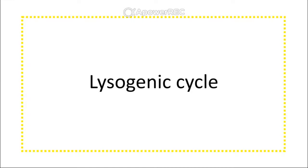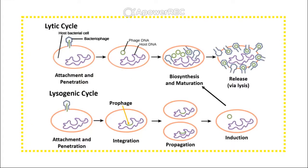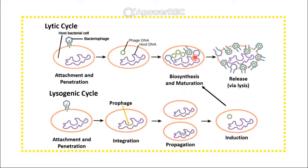The lysogenic cycle is the process some bacteriophages undergo where, after injecting their DNA, they integrate their nucleic acid into the host chromosome and become a prophage. They can remain there while the cell replicates, but eventually an environmental factor causes induction — a copy of the viral nucleic acid is made and the lytic cycle begins, where biosynthesis and maturation package new virions that are then released via lysis.